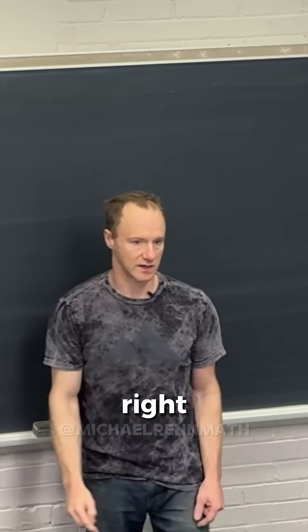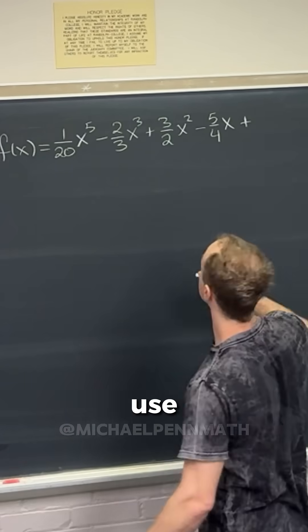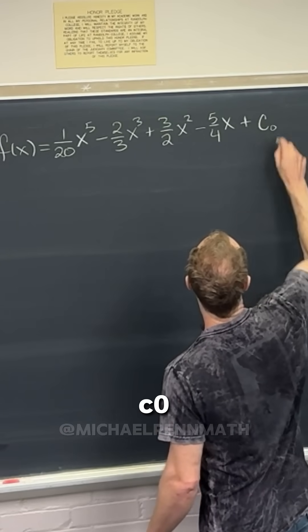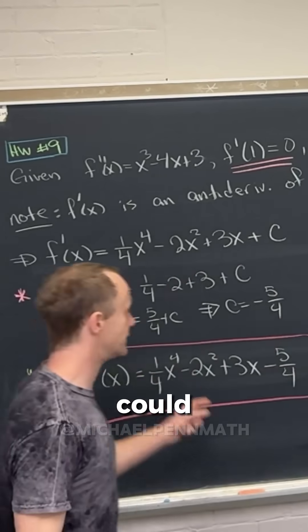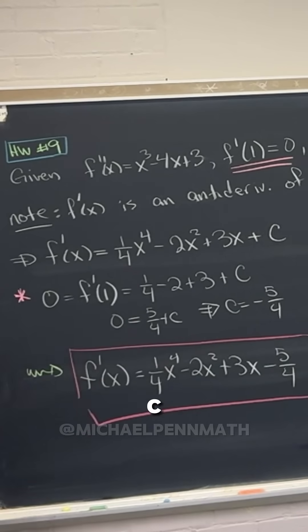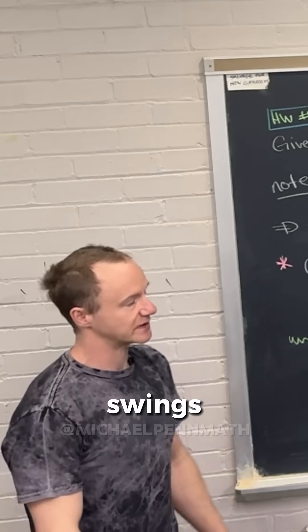we kind of like need a new constant, right? So maybe we would use c zero for this constant, you know, I guess we could have used like c one for this constant and c two for that constant, it's kind of like swings and roundabouts.